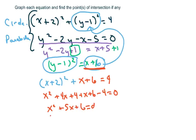And you're going to factor, so you get x plus 3, x plus 2 equals 0. So we know that x equals negative 3 and x equals negative 2.